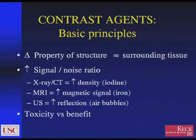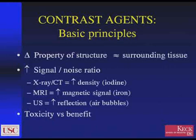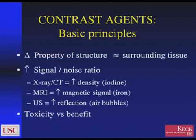Typically in X-ray or CT, we want to increase the density of the structure we'd like to see, in which case we often use iodinated or barium-filled compounds. In MR, we increase the signal-to-noise ratio by increasing the amount of magnetic signal, typically using some sort of iron-containing compounds such as gadolinium. With ultrasound, this is done by the use of air bubbles, which are very highly reflective.